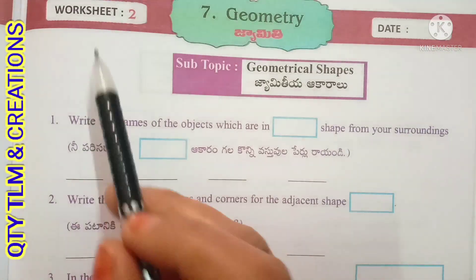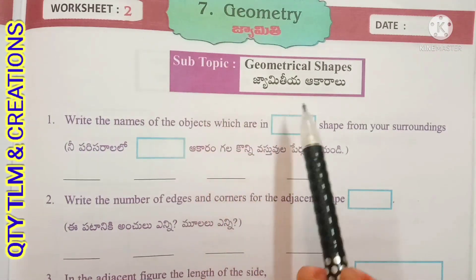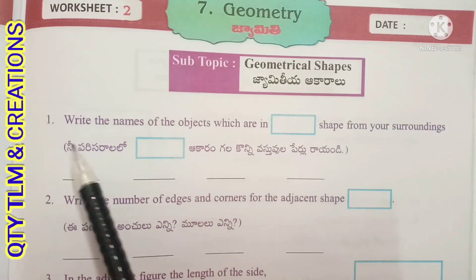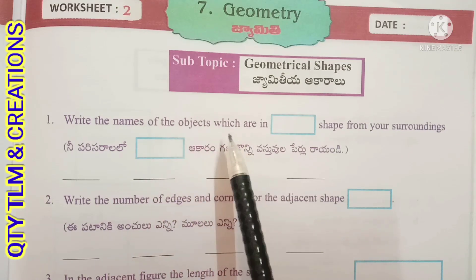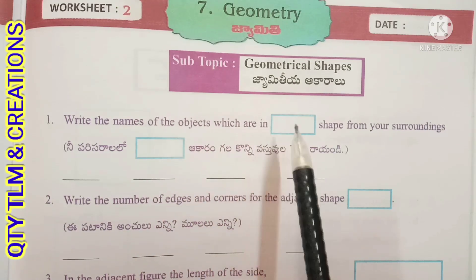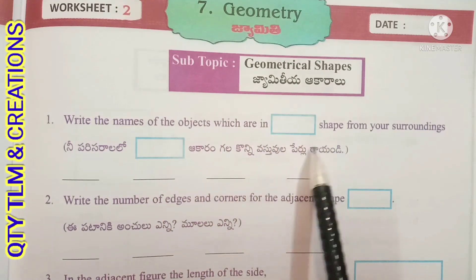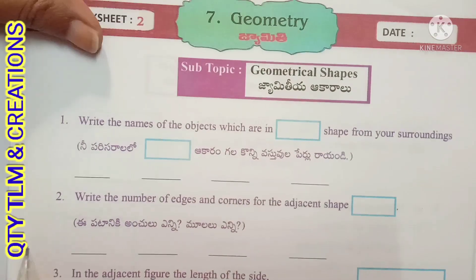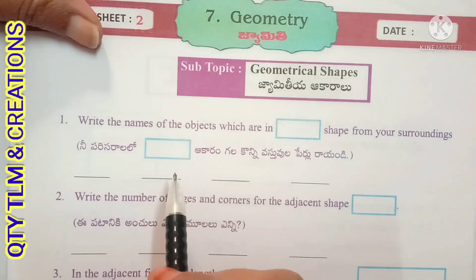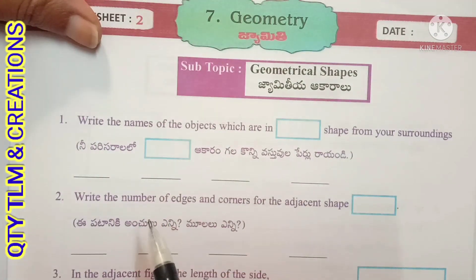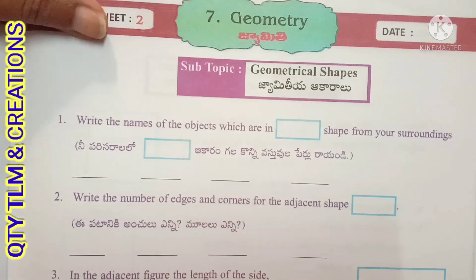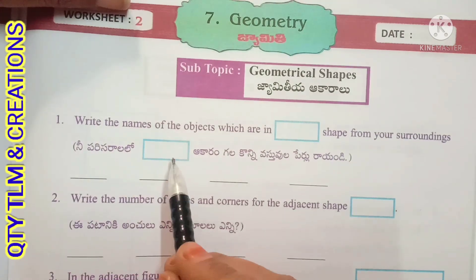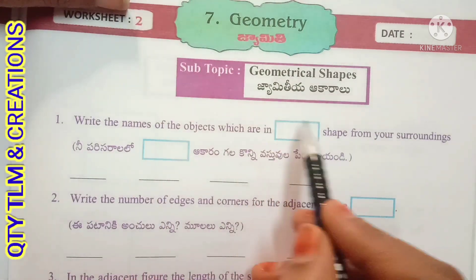Next: Worksheet 2, Subtopic Geometrical Shapes. First question: write the names of objects which are in rectangle shape from your surroundings. For example: blackboard, bench, table, book, exam pad, charts — these all look like rectangle shapes.